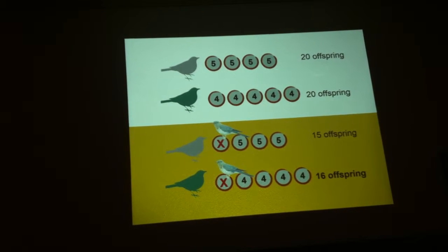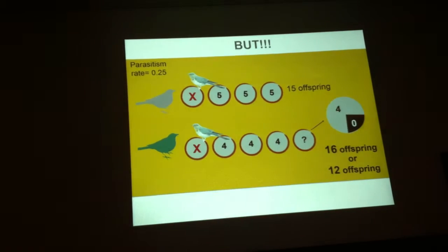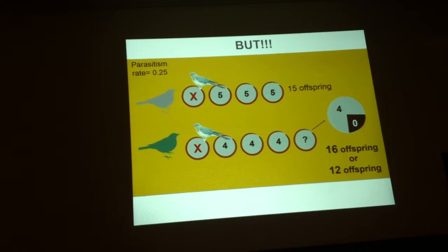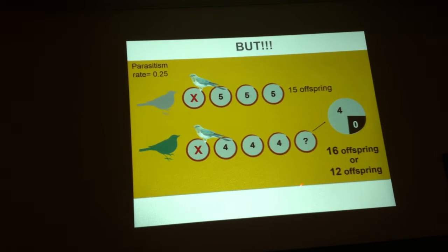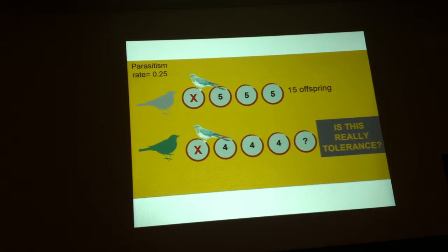However, that extra clutch laid by the green bird is also a target of parasitism and can also be parasitized. So if the parasitism rate in this population is one in four nests, then it's also one in four chances that that extra clutch can be parasitized. And then the whole green strategy will have only 12 chicks instead of 16. So taking this into account makes us think that it's not that straightforward, the tolerance strategy. We wanted to know whether this could really be happening in nature.